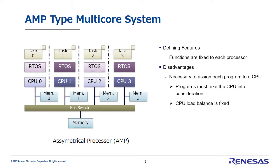When operating the system, for example, if CPU 2 has a heavy load and CPU 3 has a light load, moving the task executing on CPU 2 to CPU 3 could very well require a major update to the program.